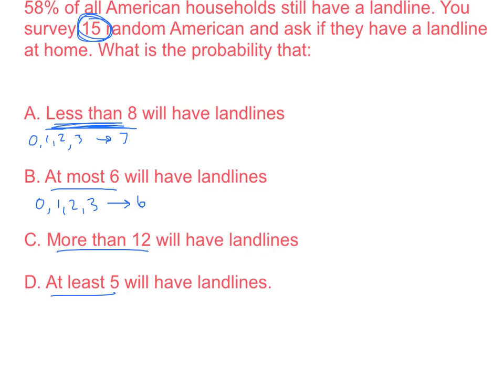More than 12 does not include 12. So more than 12 would start at 13, and it would go all the way to all 15 of them. So more than 12 in this problem means 13, 14, or 15. At least 5 means 5 is the least, and then it goes all the way up to 15. 5, 6, 7, 8, 9, 10, all the way up to 15. At least 5 says 5 is the least, 5 is the lowest number, but then it could go up.